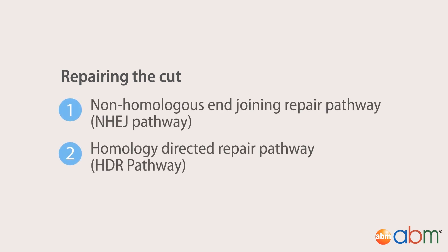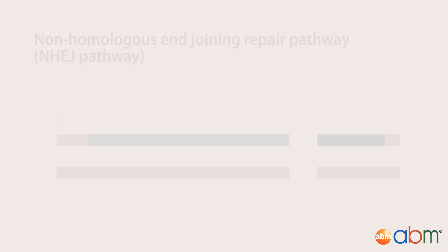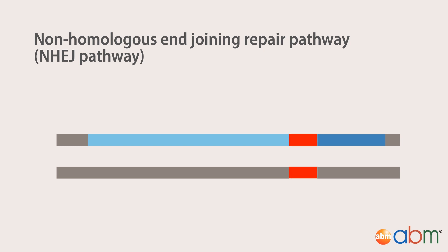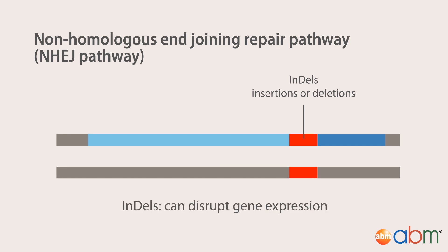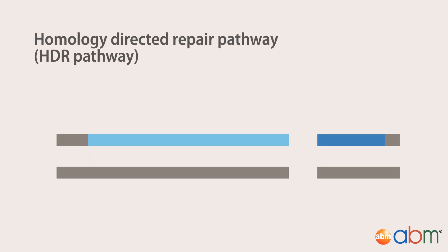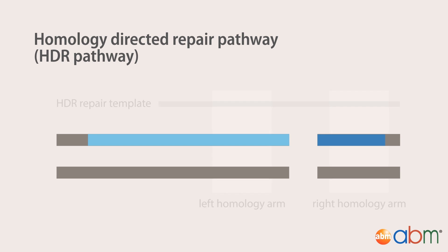In the NHEJ pathway, the ends of the DNA are ligated back together, often resulting in random small insertions or deletions that can effectively disrupt gene expression. In the HDR pathway, scientists can add a DNA repair template containing their desired sequence for insertion into the target strand at the break site.